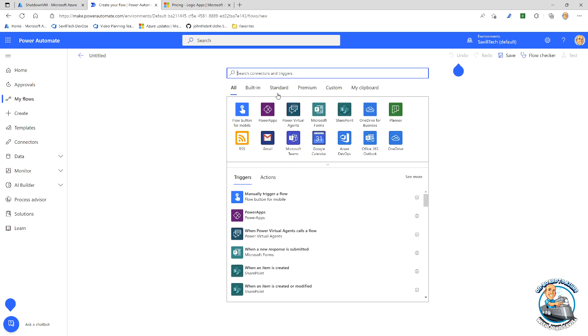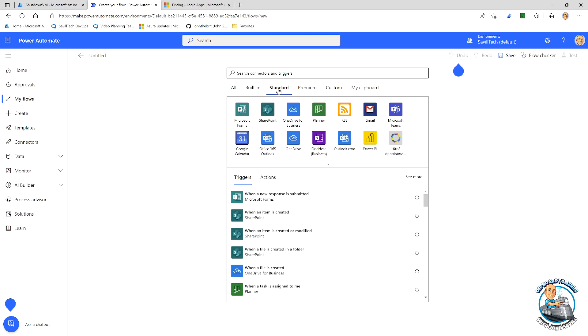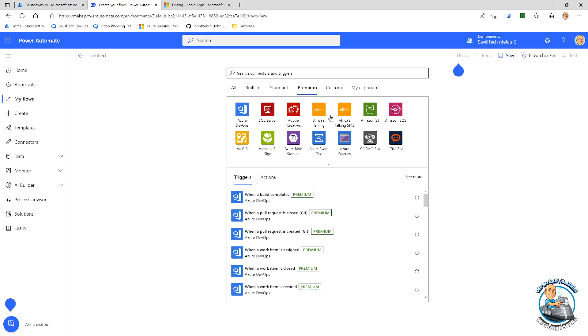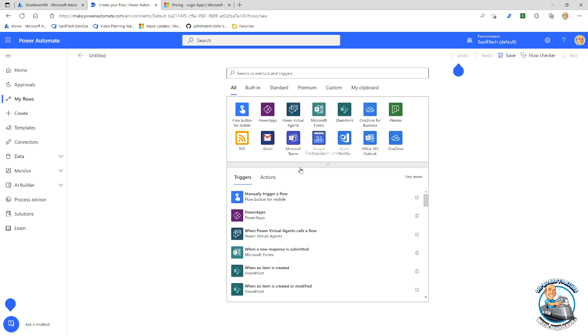And then I'm faced with the designer. So the first thing I want to do is, well, what is kind of that trigger? So I can look at, well, there were standard connectors. There were the built in. And these all align with what we have in Logic Apps as well. So it's a very, very familiar experience with how I would go and create these.